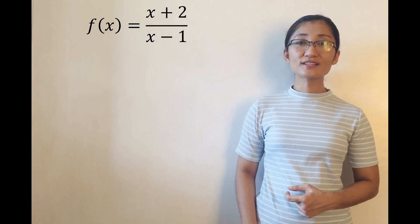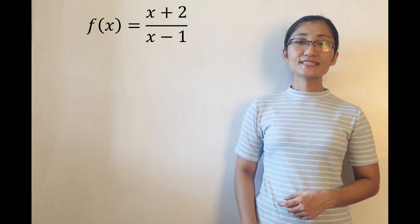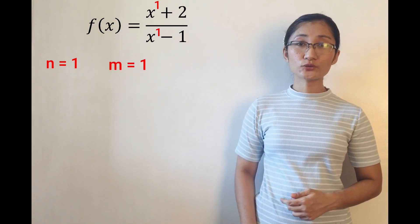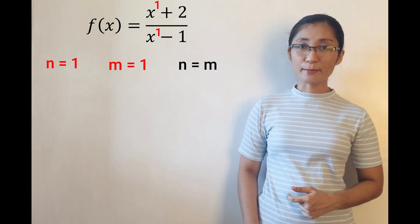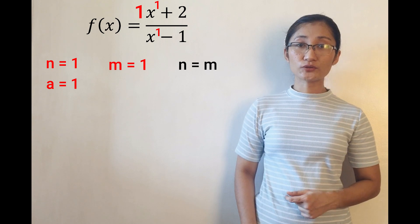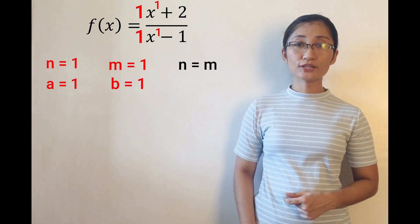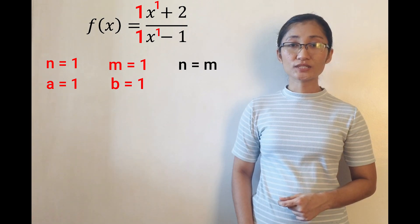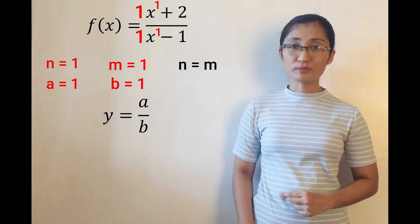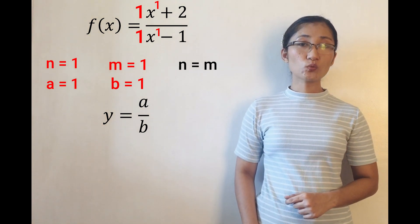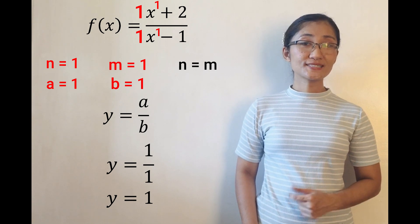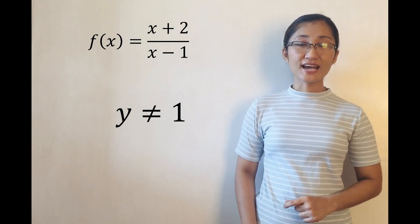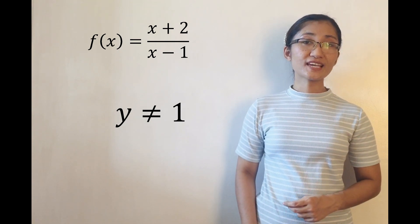Going back to our example, f(x) = (x+2)/(x−1): since n, the highest exponent of the numerator, is 1, and m, the highest exponent of the denominator, is 1, then n equals m. Since a, the leading coefficient of the numerator, is 1, and b, the leading coefficient of the denominator, is 1, the horizontal asymptote is y = a/b = 1/1, or simply y equals 1. Therefore, y is not equal to positive 1, and the range is the set of all real numbers except for positive 1.